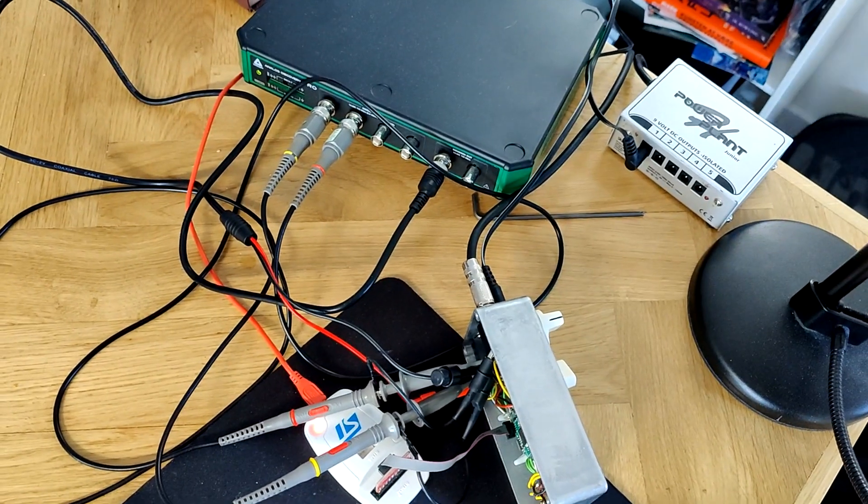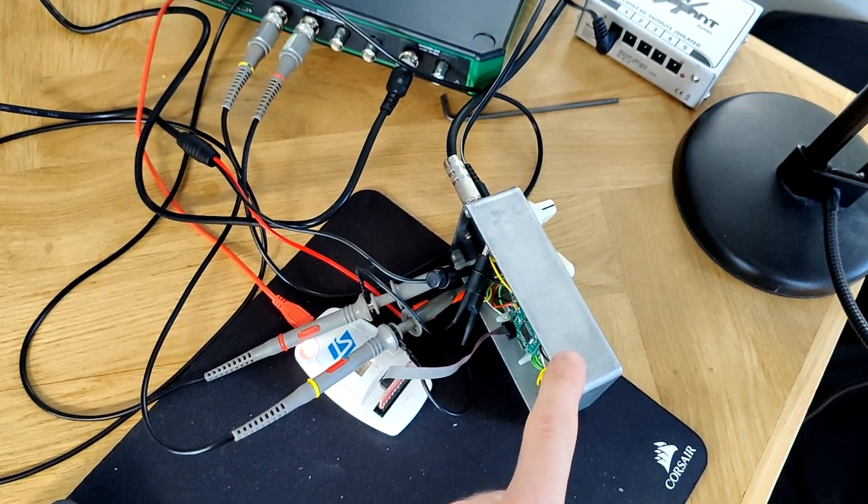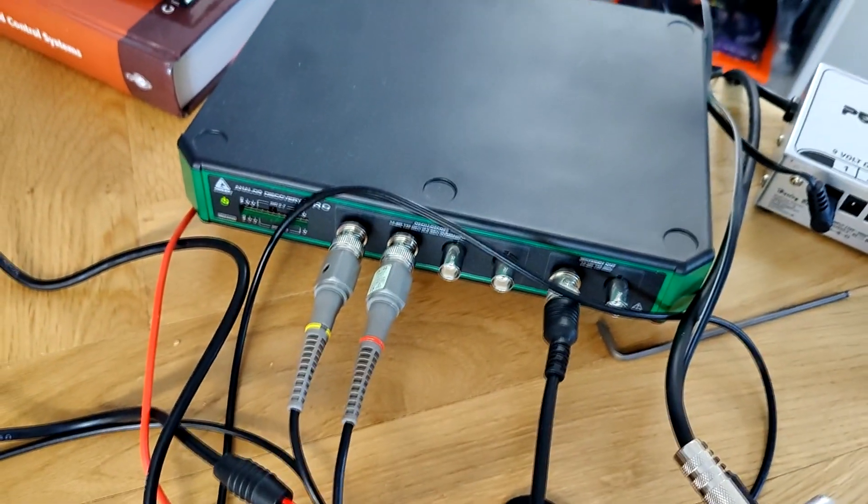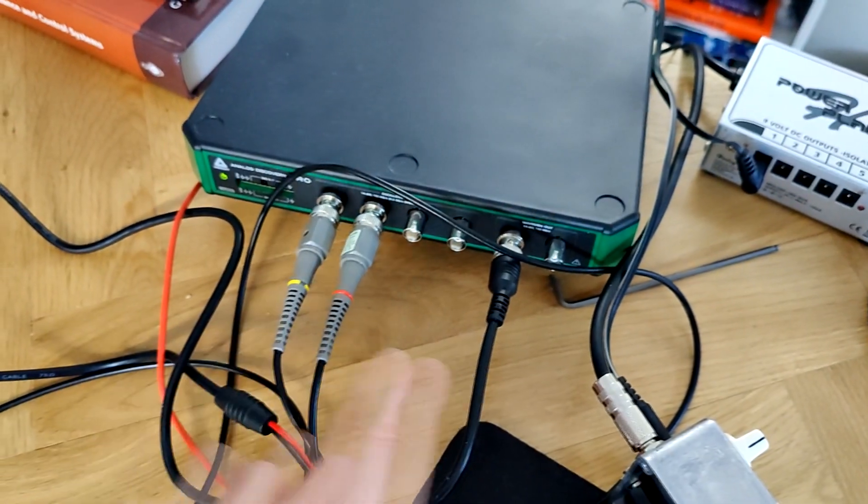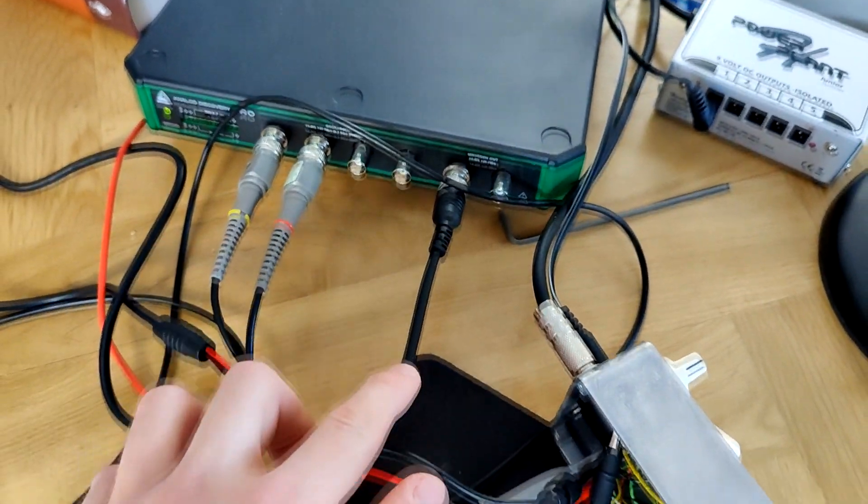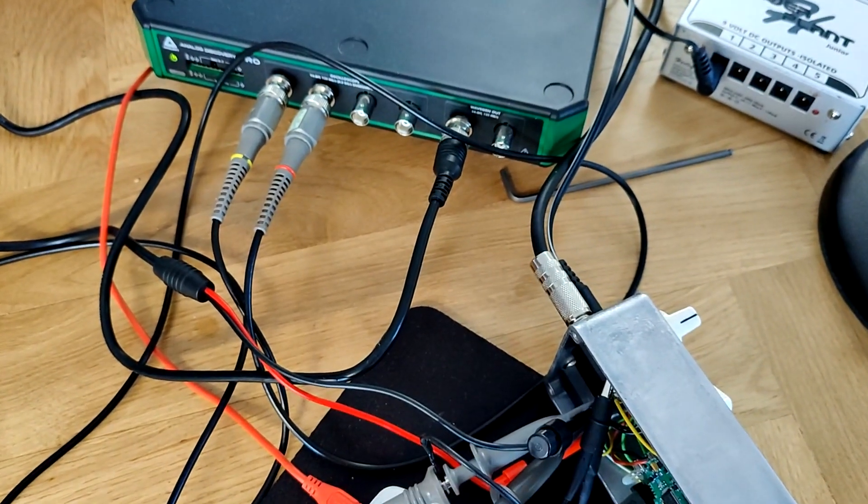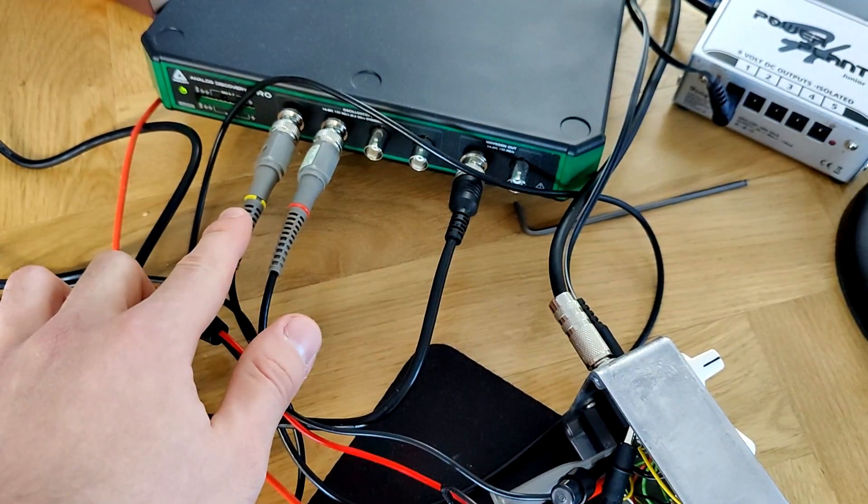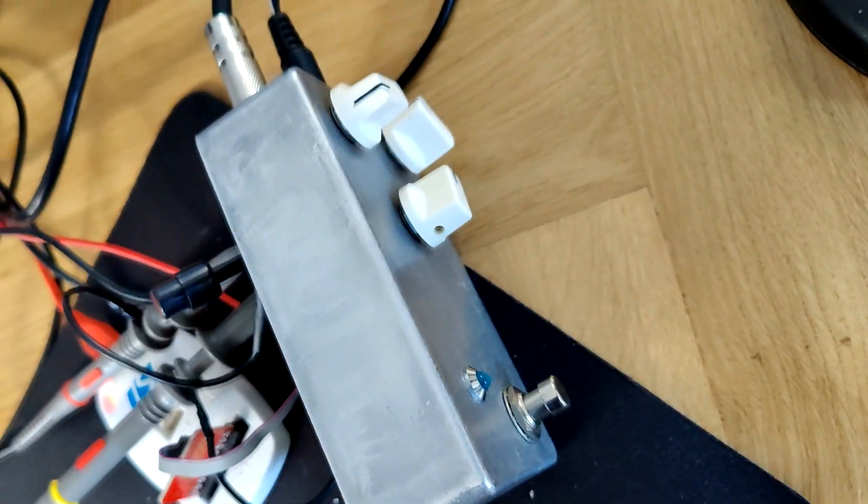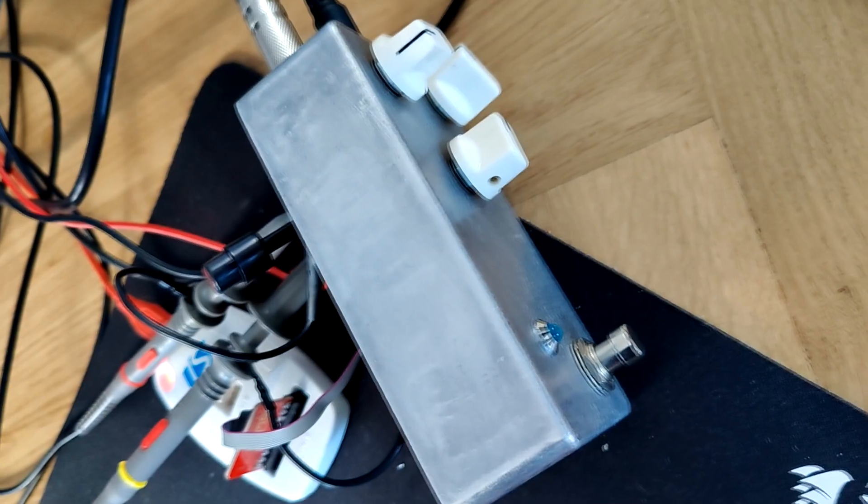This is the test setup that I'm using. You can see the LUT DSP system in here on this foot pedal is connected up to my analog discovery pro from Digilent which has four oscilloscope channels and two function generator channels. So I'm using one of the function generator channels to feed in an input like a test signal and then two oscilloscope channels to measure the input signal and then the output from my effects unit.